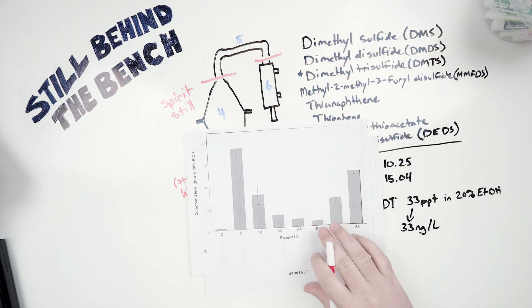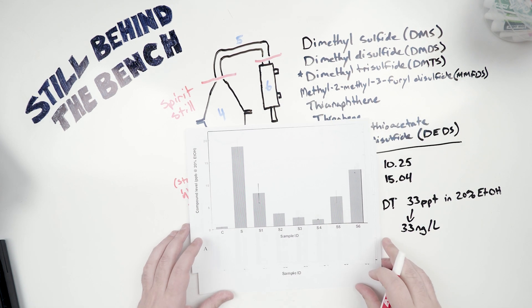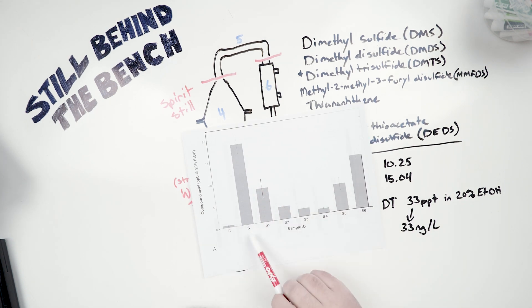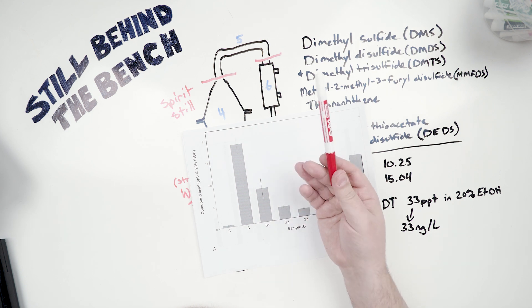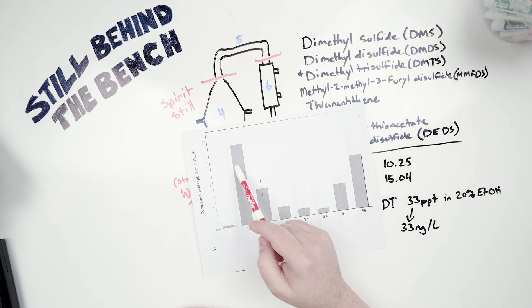Next up, I have the actual compound levels for DMTS. Again, you can see with no copper, the DMTS levels are pretty high. This would be between 17 and 18 parts per billion, and we know that it's measurable at 33 parts per trillion, so this is a very high amount.